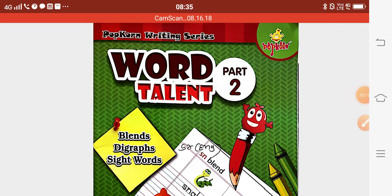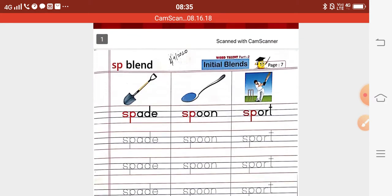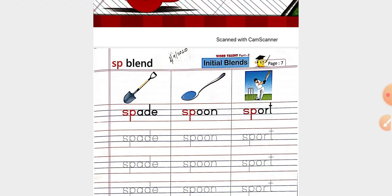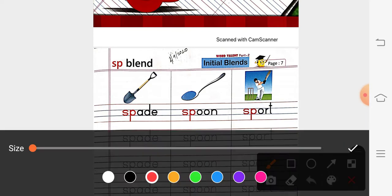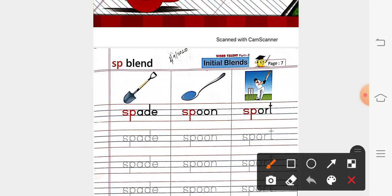Everyone has to open your book today. World Talent Part 2. Opened. And then, come to page number 7. So, on page number 7, what are we going to learn? We are going to learn Initial Blends. That is, SP Blends.